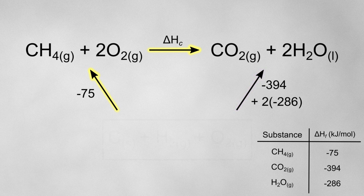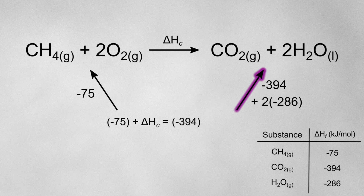For this route, it'll be the enthalpy of formation for methane — minus 75 kJ per mole — plus the enthalpy of combustion for methane, which we're trying to calculate. According to Hess's law, that equals the other route: the enthalpy of formation for carbon dioxide, minus 394 kJ per mole, plus 2 times the enthalpy of formation for water, which is 2 times minus 286 kJ per mole, since there are 2 moles of water.